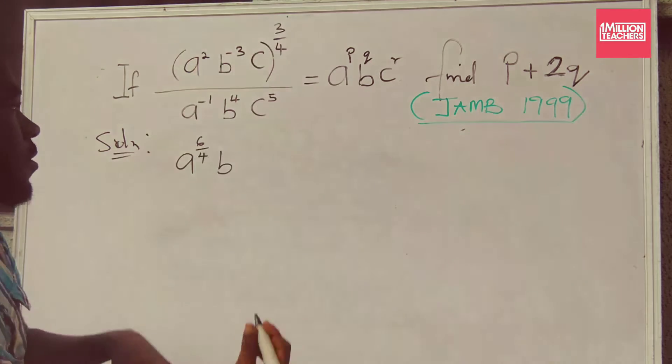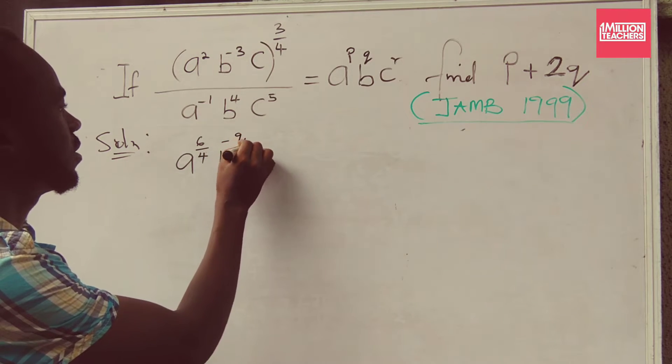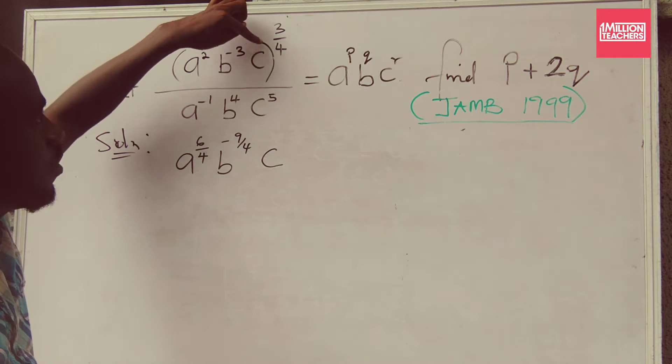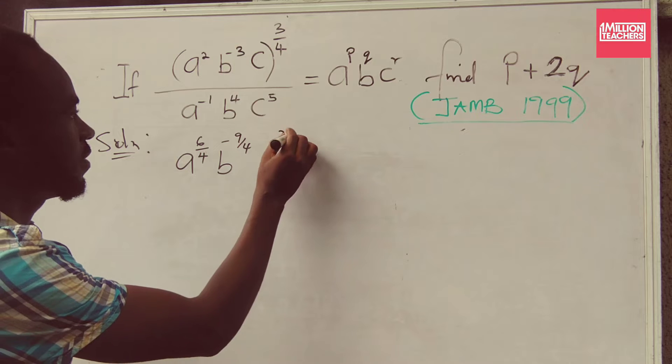1 times 2 over 4 is 3 over 4. That will give me minus 9 over 4. Remember, the power here is 1. So 1 times 2 over 4 is 3 over 4.